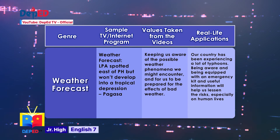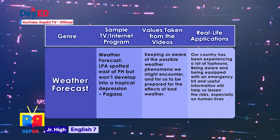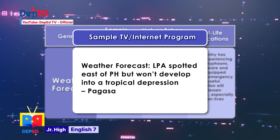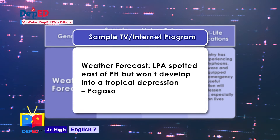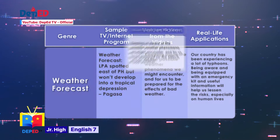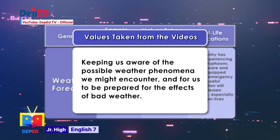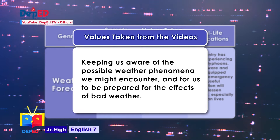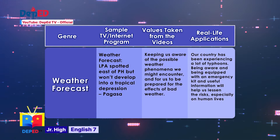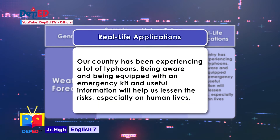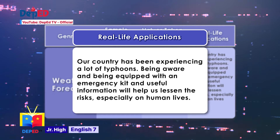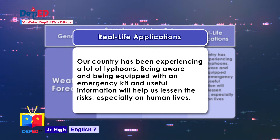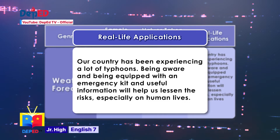The fourth genre is weather forecast. The sample program is a weather forecast: LPA spotted east of the Philippines but won't develop into a tropical depression, according to Pag-Asa. The introductory values include keeping us aware of possible weather phenomena we might encounter, and for us to be prepared for the effects of bad weather. The real-life application is that our country has been experiencing a lot of typhoons, and being aware and equipped with an emergency kit will help us lessen the risks, especially on human lives.